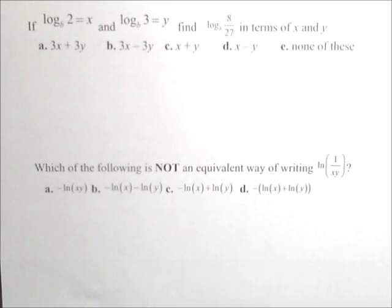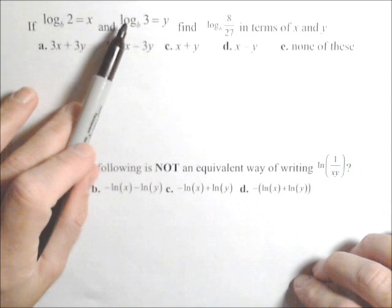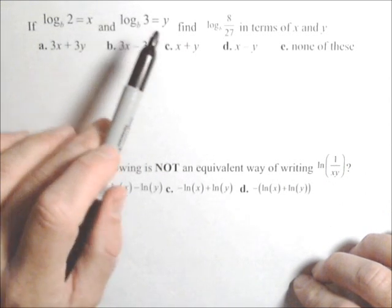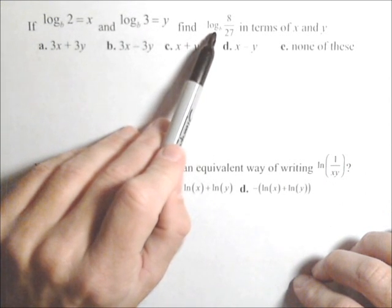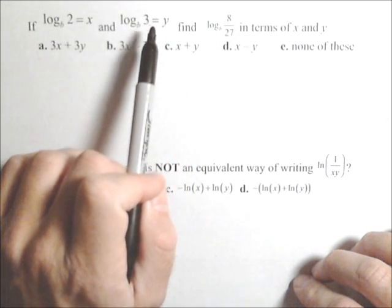All right, the next two problems involve properties of logs and rewriting expressions. So we know that log base b of two equals x and log base b of three equals y. So what that's telling us is we want to rewrite this expression in terms of log base b of two and log base b of three.